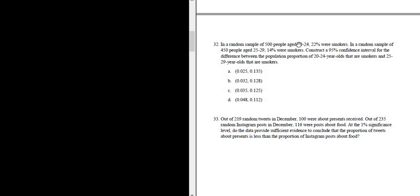Looks like we have two samples in this problem. We want a 95% confidence interval for the difference between the population proportion of 20 to 24 year olds that are smokers and 25 to 29 year olds that are smokers. So it looks like we have a confidence interval for the difference between proportions.